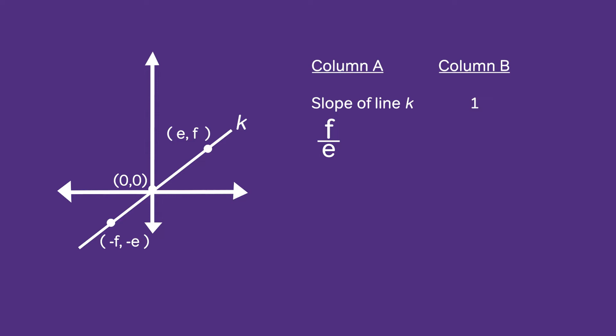Now I'd like to write the equation for line k in slope y-intercept form where m equals the slope and b equals the y-intercept. We already know that the slope is equal to f over e. We can see by the diagram that the y-intercept is equal to 0. Since we're adding 0 here we can simply omit that portion. So we now have an equation for line k.